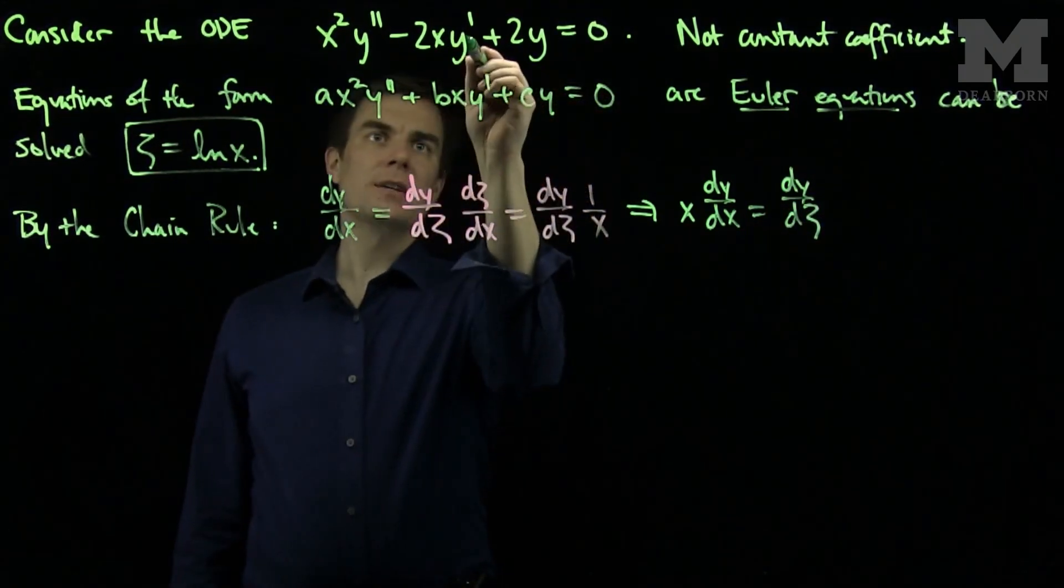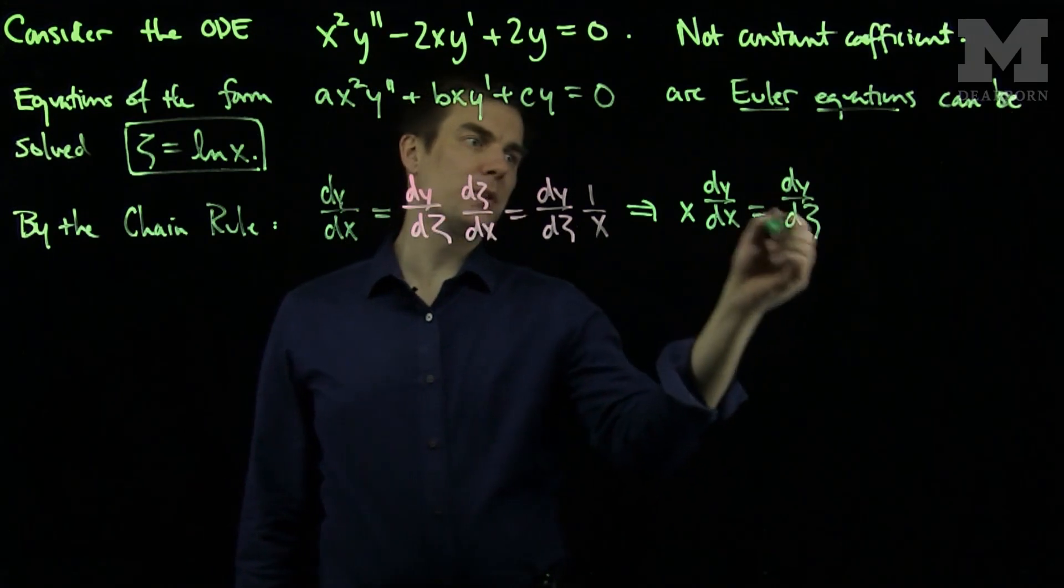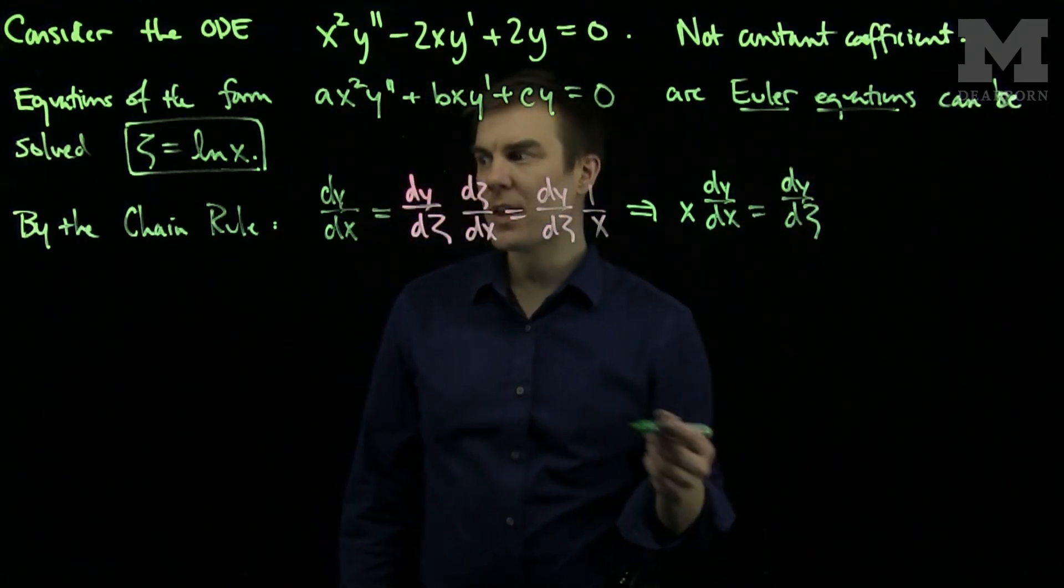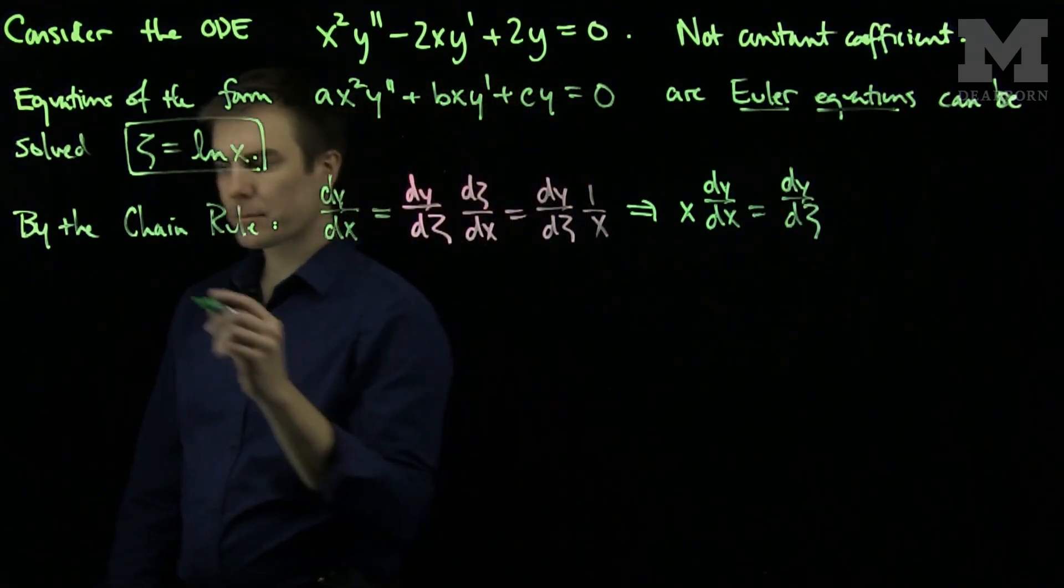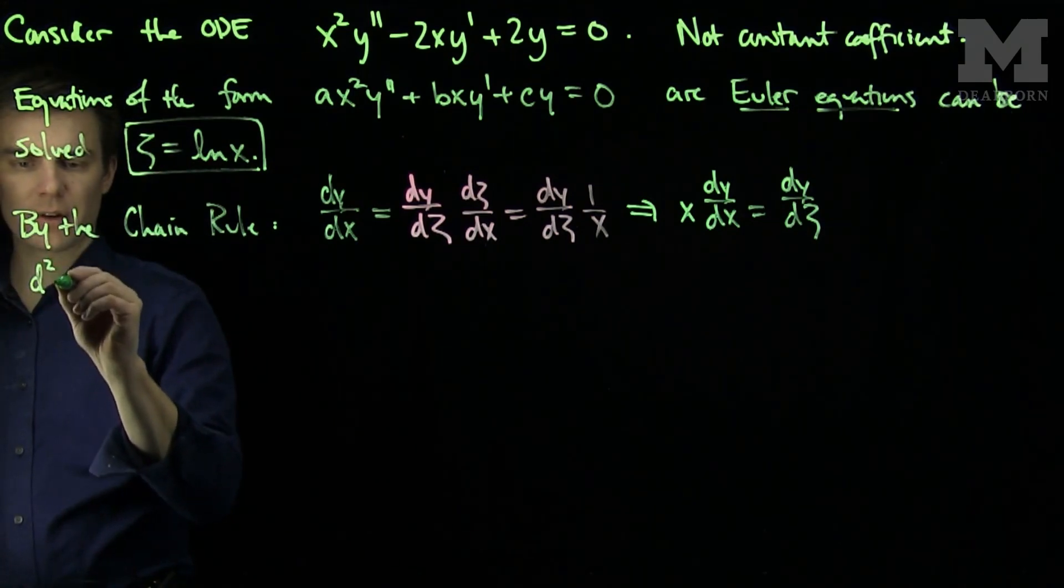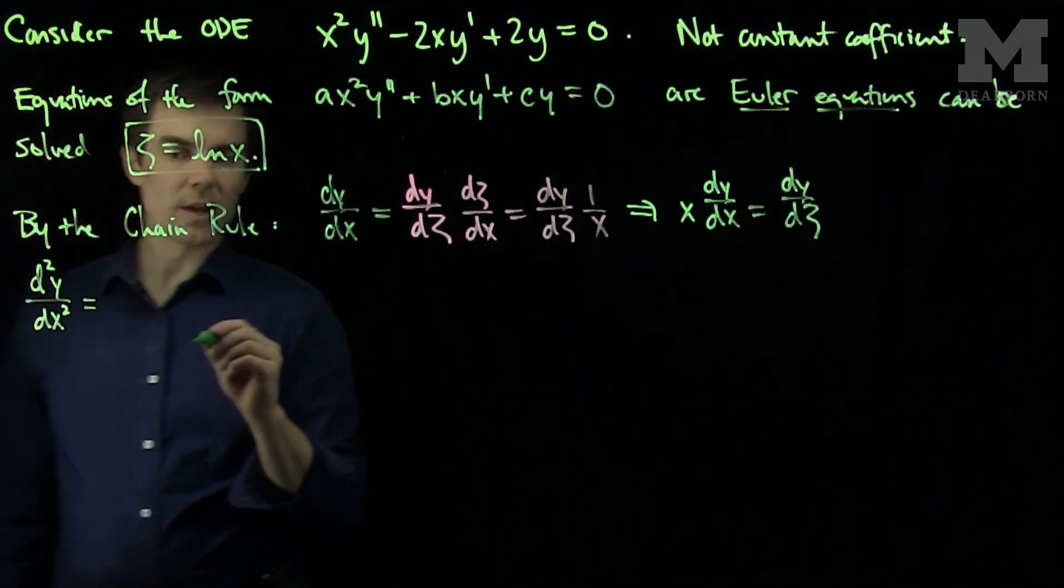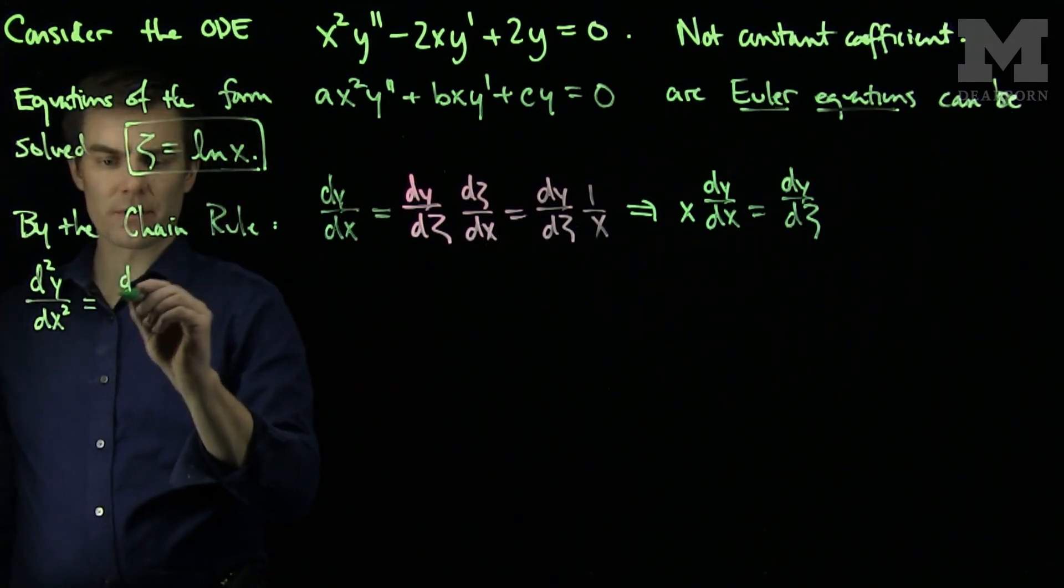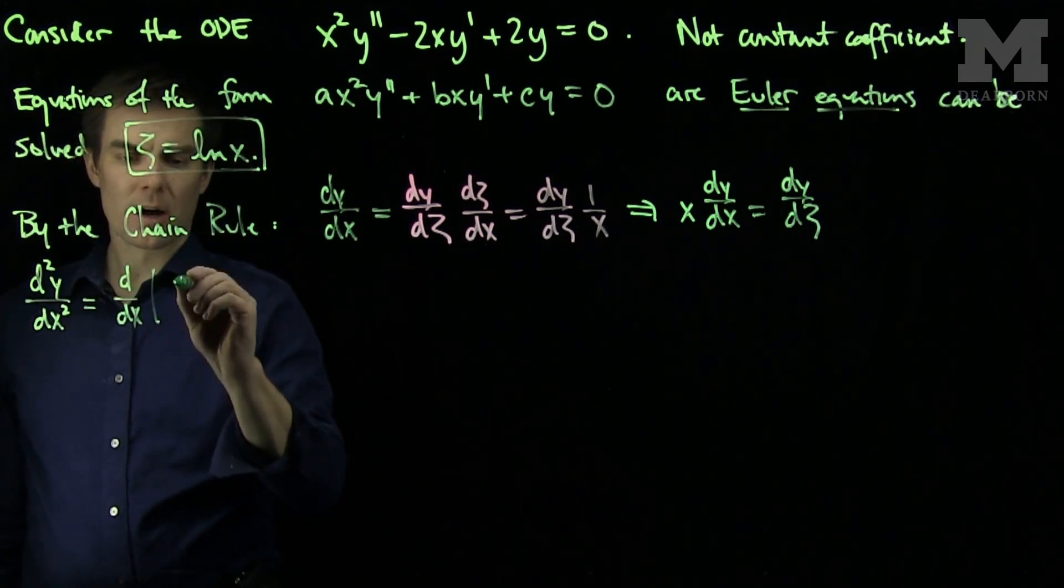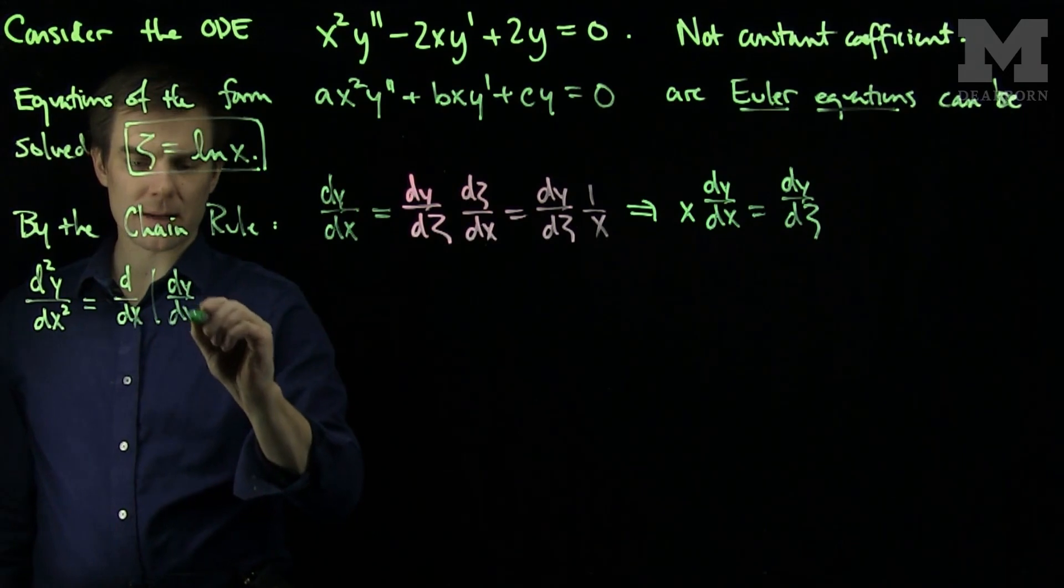So this x dy dx term can be replaced with a single dy d zeta. Now we will apply the chain rule again. I will say that the second derivative of y with respect to x squared, we can compute this by saying that this is the derivative with respect to x of the derivative of y with respect to x.